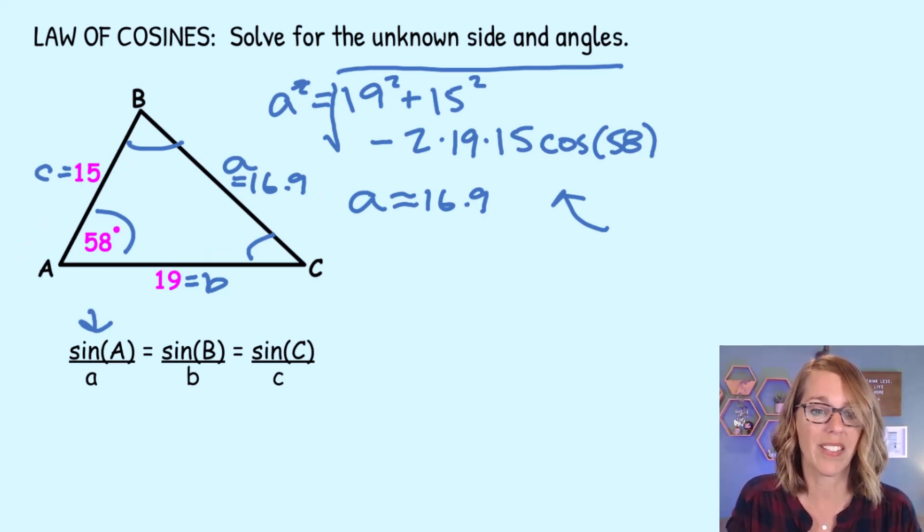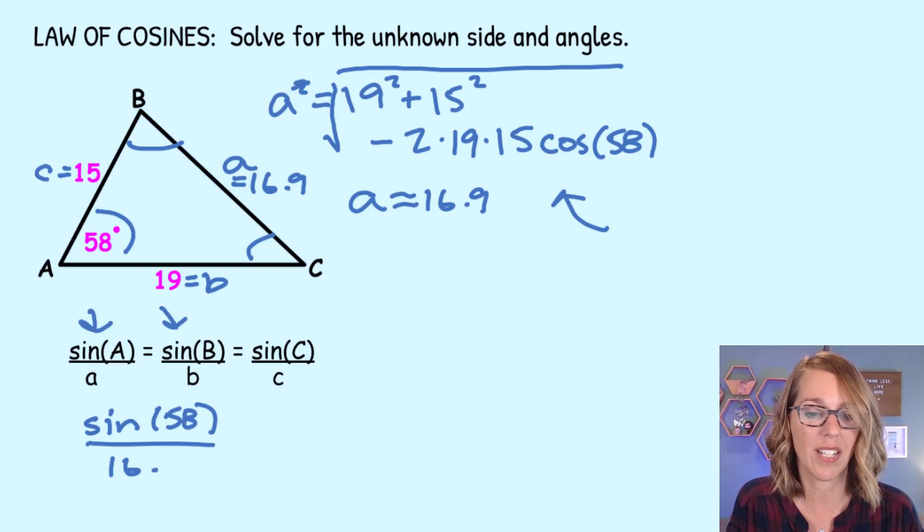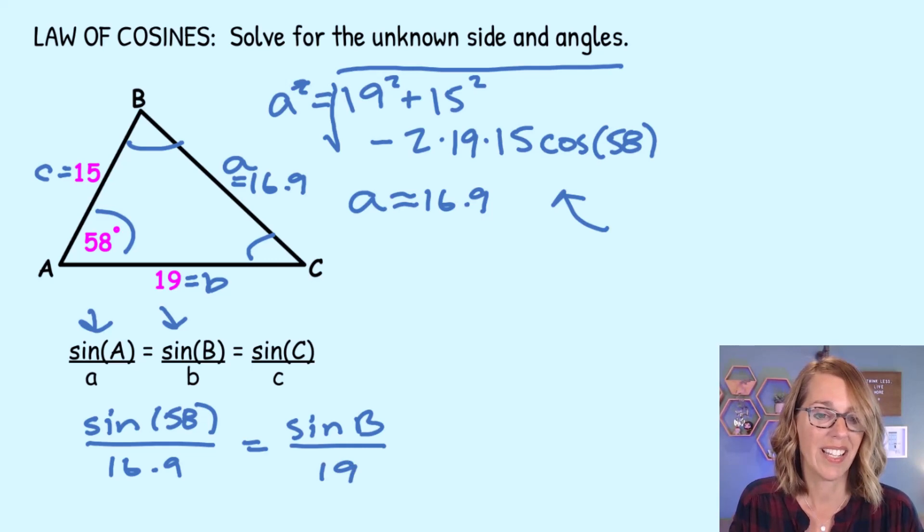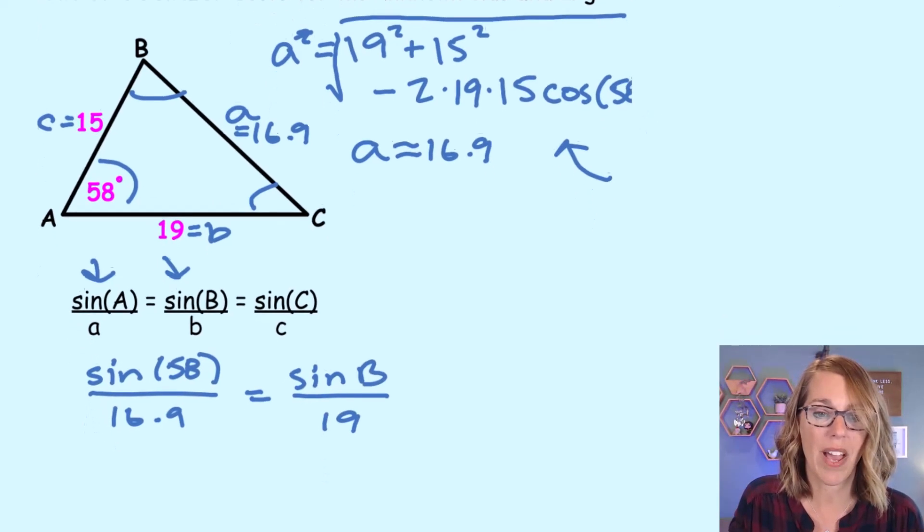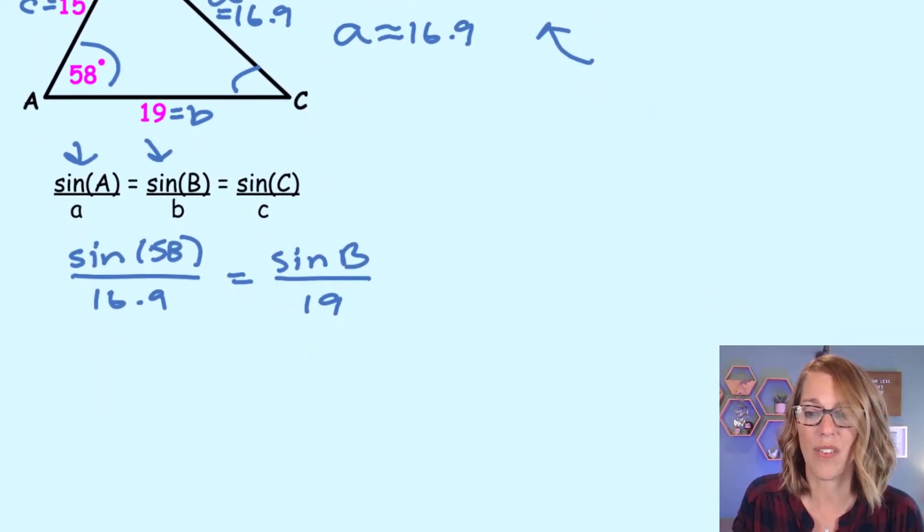Doesn't matter which one you pick up next. Let's go ahead and do the sine of B over B. So putting this one together, I've got the sine of A, so the sine of 58 degrees, divided by side A, which we just solved for, 16.9, is equal to the sine of B. I do not have angle B, divided by side B, and side B is 19. Let me move some of this up out of the way, and let's continue solving.